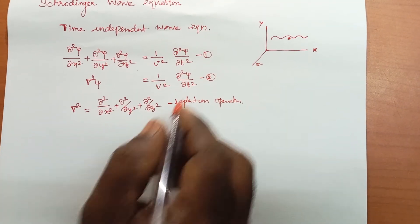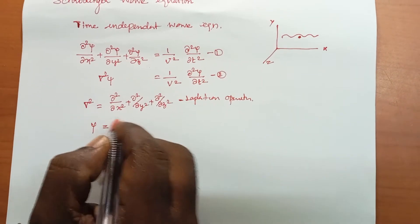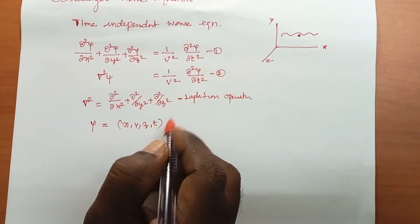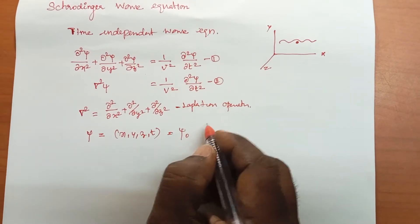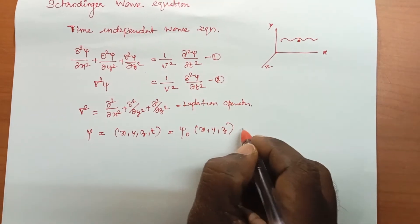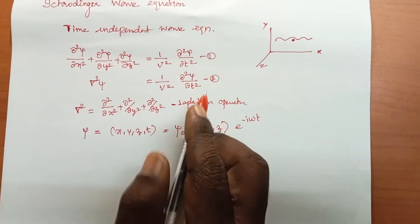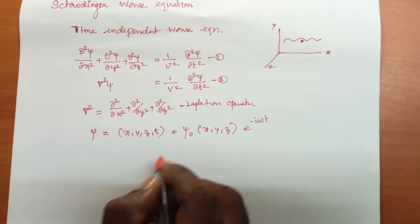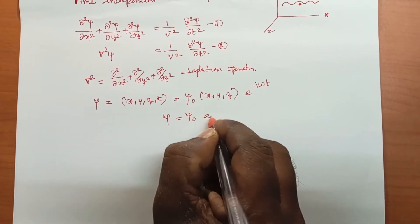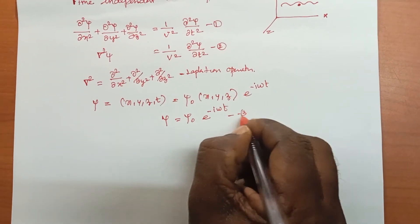The solution for equation 2 is ψ(x, y, z, t) = ψ₀(x, y, z) · e^(−iωt). We can write this as ψ = ψ₀ · e^(−iωt), which is equation number 3, where ω is the angular frequency.